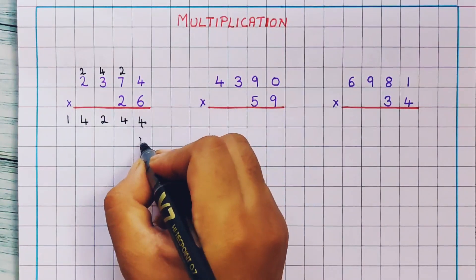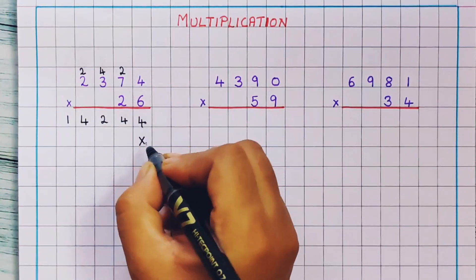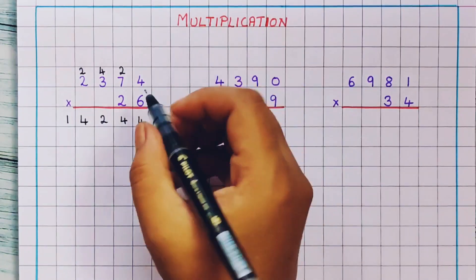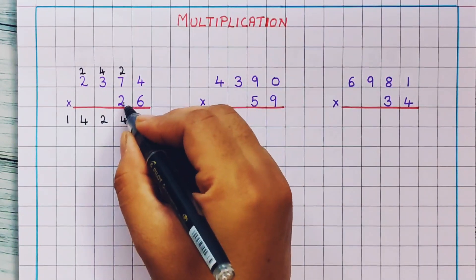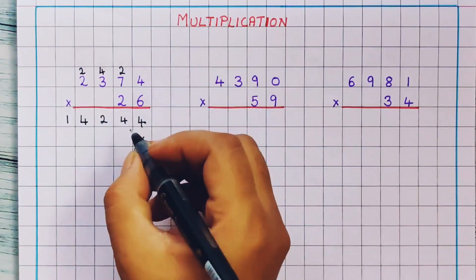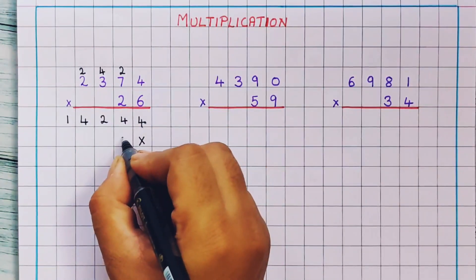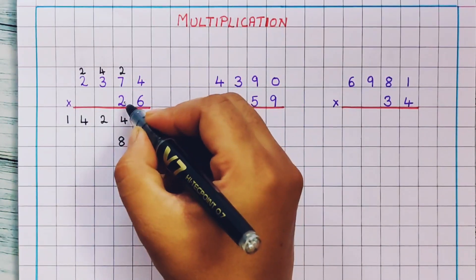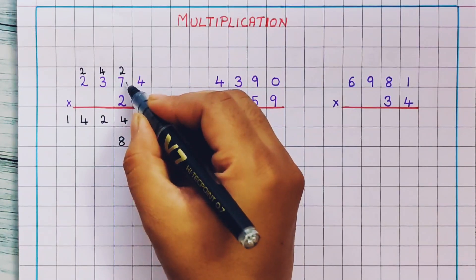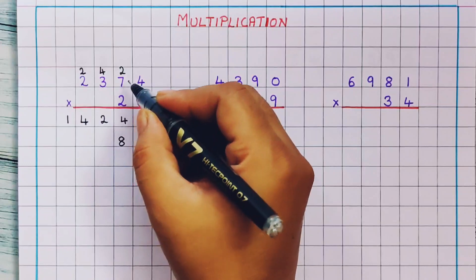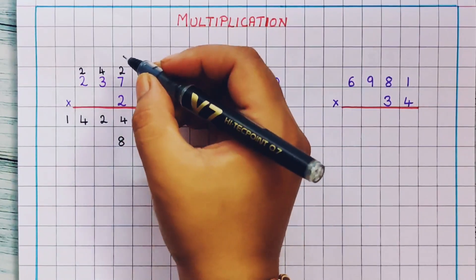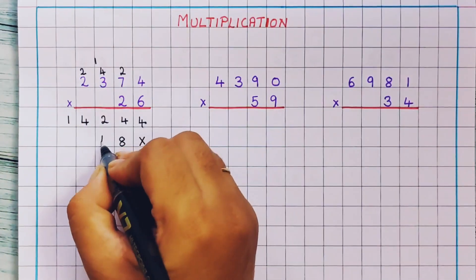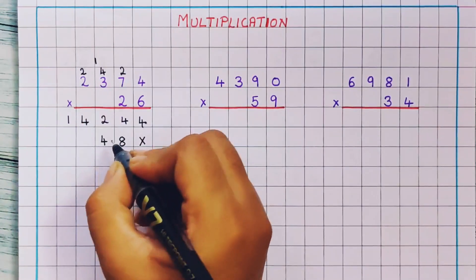So here I am going to put a cross mark because I am not going to use this place. Now let's start. 2 4's are 8. So here I will write 8. Next, 2 7's are 14. So I will write 1 and 4 — 14.